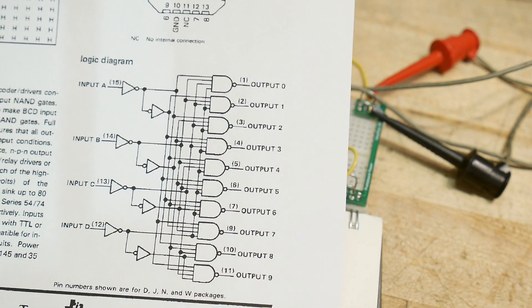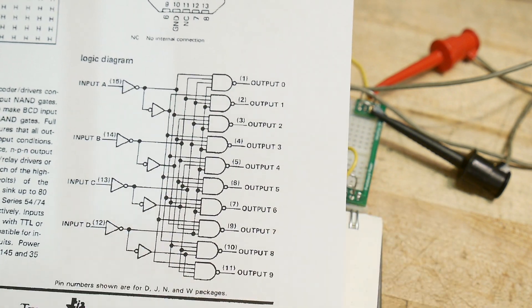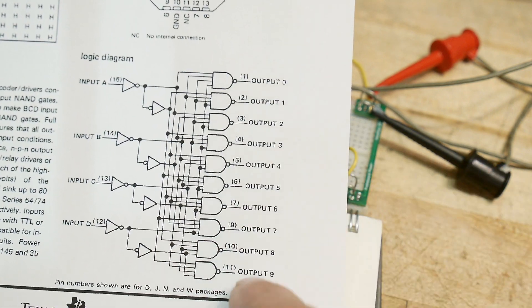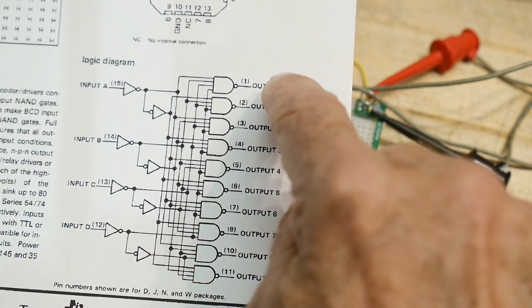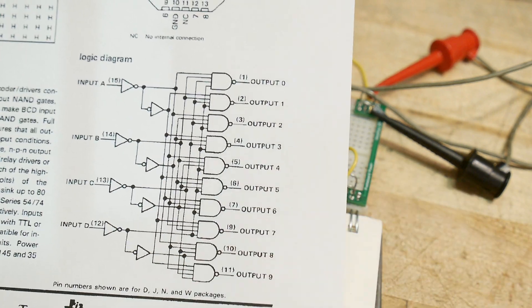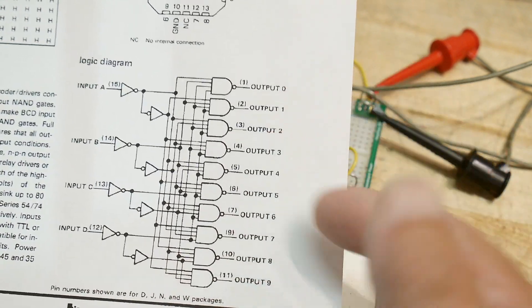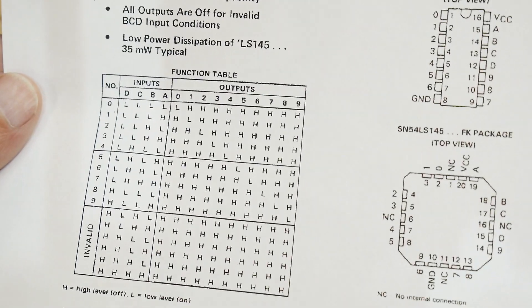So it decodes that. So if you put zero through nine in binary on this side, it will enable one of the outputs zero through nine. So it'll only enable one of these, and you can check that with the truth table.